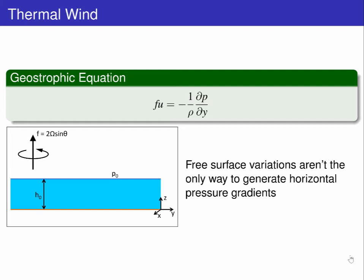Now, the geostrophic approximation relates flow to the horizontal pressure gradient, and what we have done with the geostrophic balance is to get a horizontal pressure gradient from the free surface variations.